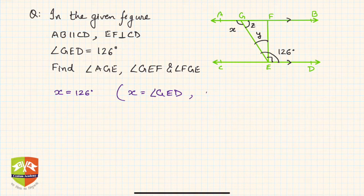Why? Because they are alternate interior angles. So clearly, X is equal to 126 degrees. There's no big thing here. So angle AGE is equal to 126 degrees.